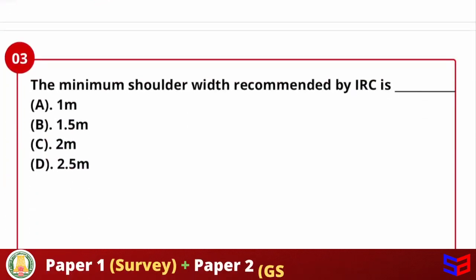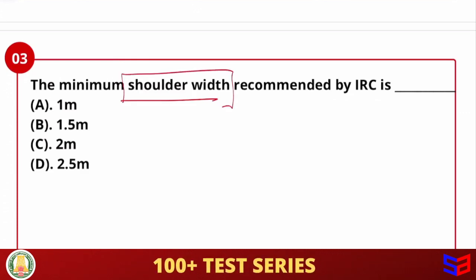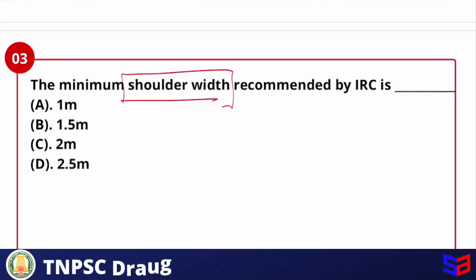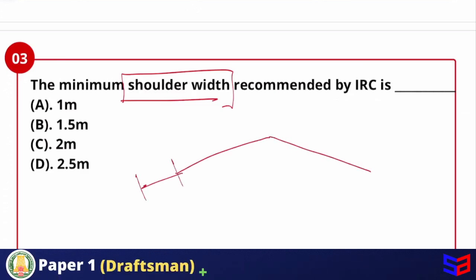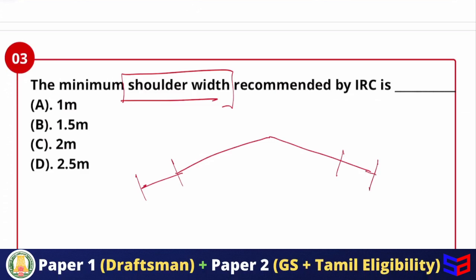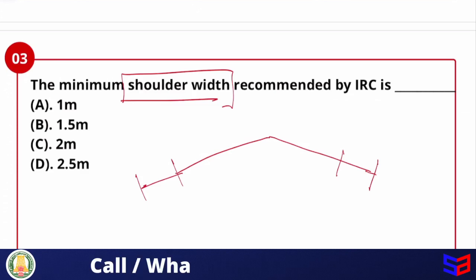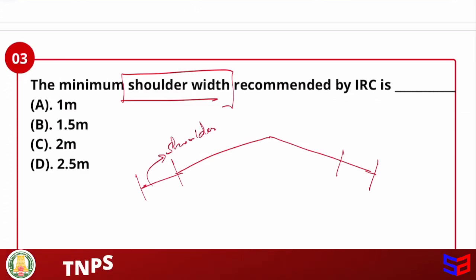Next question: the minimum shoulder width recommended by IRC is how much? The options are 1 meter, 1.5 meter, 2 meter, and 2.5 meter. The shoulder is provided at the edge of the pavement and is mainly for emergency purposes — for example, if a vehicle breaks down, it uses the shoulder as a service lane.